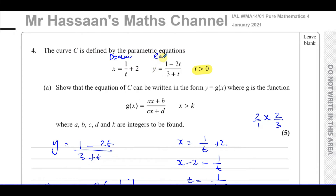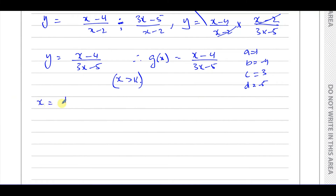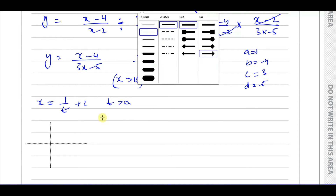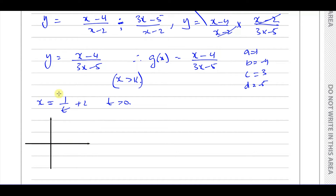The x part represents the domain and the y part represents the range of the function. So we look at x equals 1 over t plus 2, where t is greater than zero. It's like we're plotting x against t: the t-axis is the input and whatever the x equation outputs gives us the domain of our Cartesian equation.